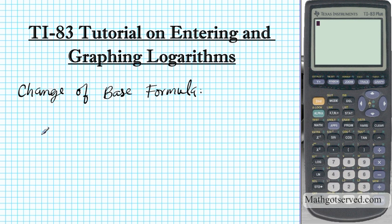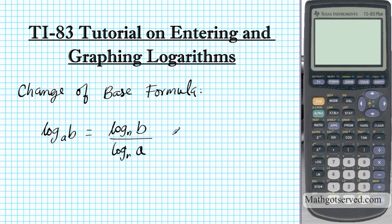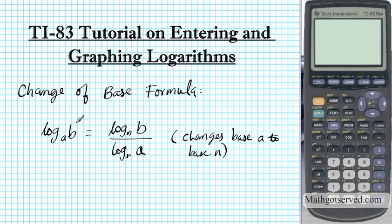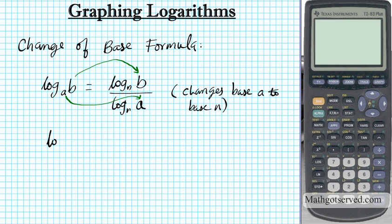So what is the change of base formula? Let's say you have log base a of b and you want to change it into base n — it's simply going to be log base n of the argument b, divided by log base n of the base a. So this formula changes base a to base n. The argument goes on top and the base becomes the argument in the denominator. If I wanted to change log base a of b to the common logarithm, this becomes log of b over log of a.